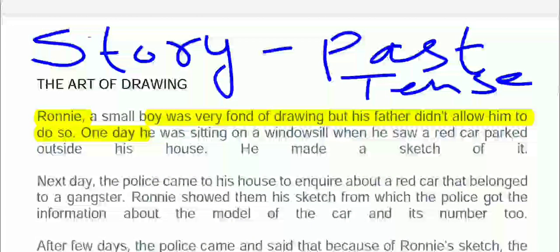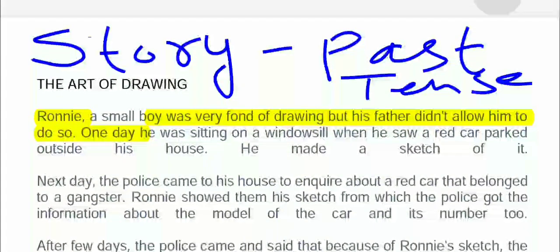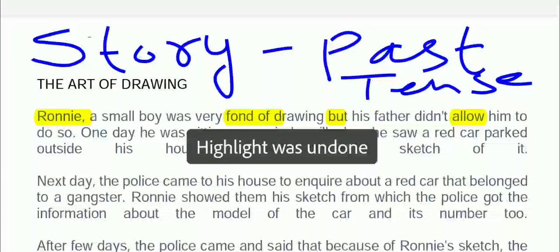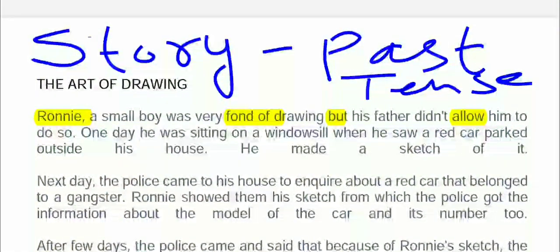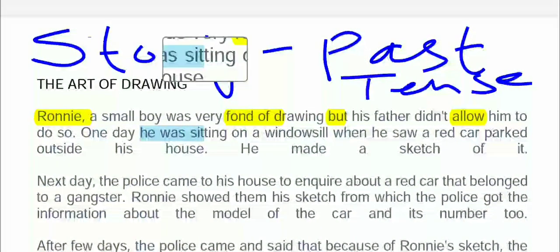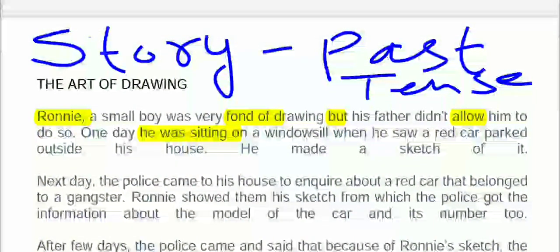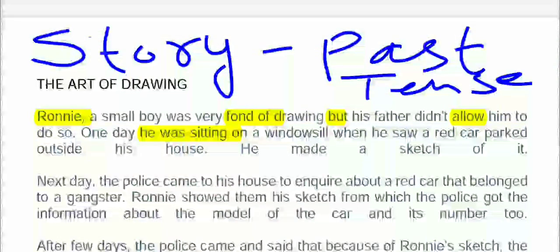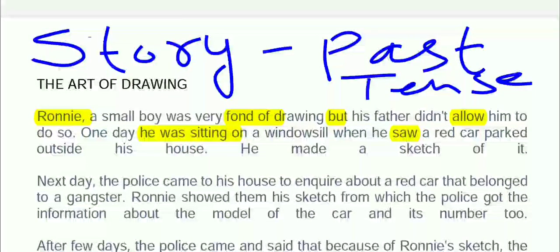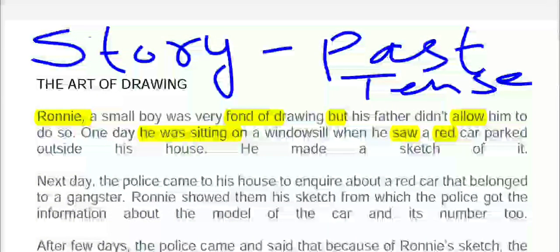One day he was sitting on a windowsill — 'he was sitting' is past continuous tense. When he saw a red car — see, saw, seen. Red is an adjective, car is a noun. Parked outside his house.